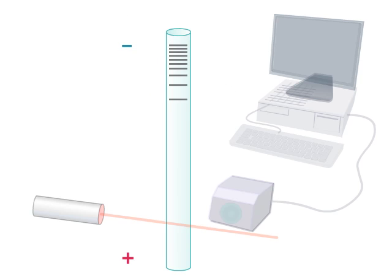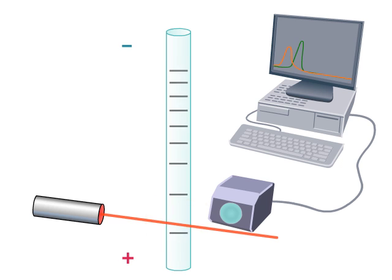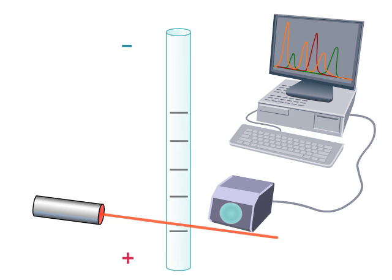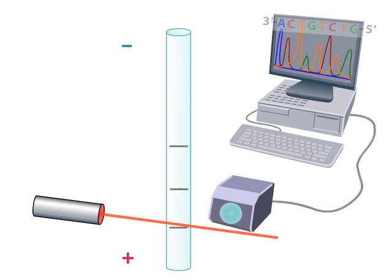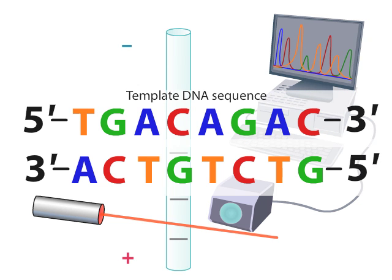A laser and detector positioned at the bottom of the capillary read individual fragments as they pass. Because we know the color of each tag base, we can use a computer to print a series of colored peaks whose order corresponds to the template DNA sequence.